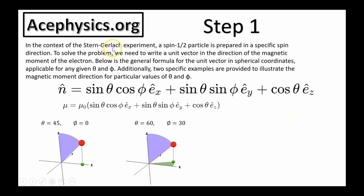Step one: in the context of the Stern-Gerlach experiment, a spin-one-half particle is prepared in a specific spin direction. We need to write a unit vector in the direction of the magnetic moment of the electron using the general formula in spherical coordinates applicable for any theta and phi. This n-hat is a unit vector that points in any direction — you may have seen this in vector calculus or multivariable calculus. The magnetic moment is equal to mu-naught, the magnitude of the magnetic moment, times the unit vector. For example, if theta equals 45° and phi equals 0°, the magnetic moment lies in the xz-plane. If theta equals 60° and phi equals 30°, the magnetic moment points off in a direction making those angles, with magnitude equal to the magnetic moment of the particle.